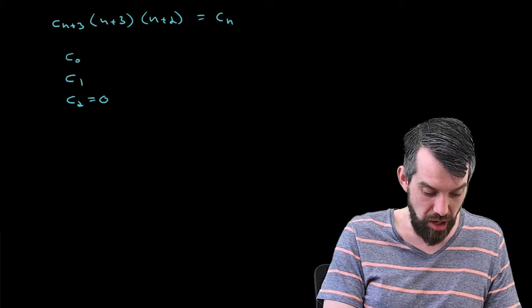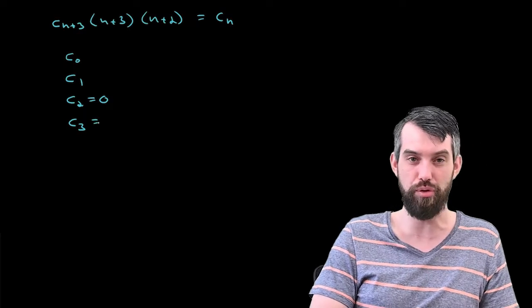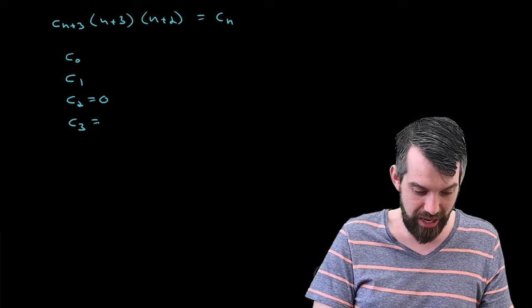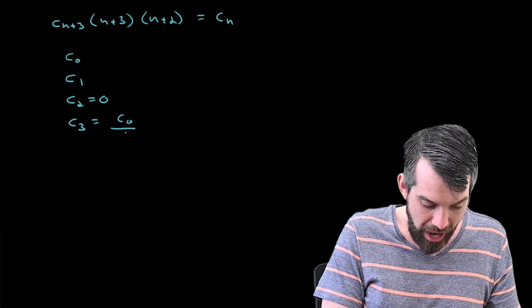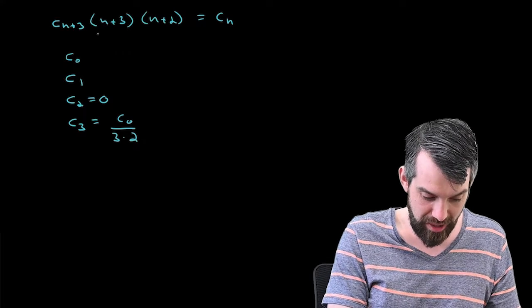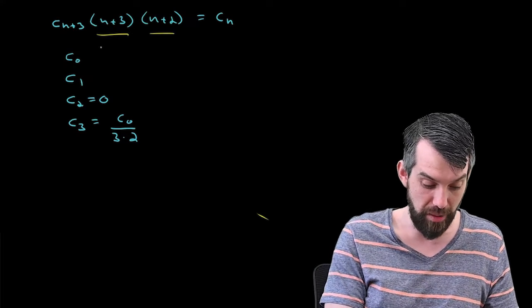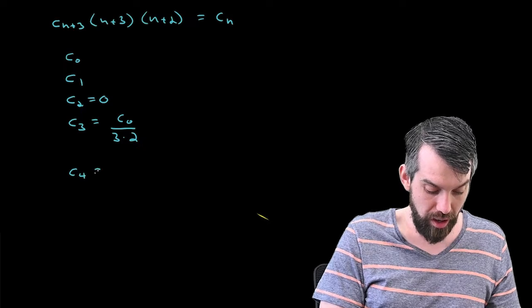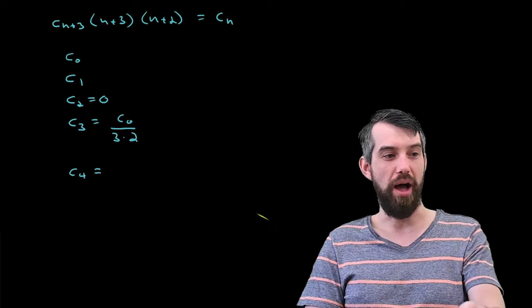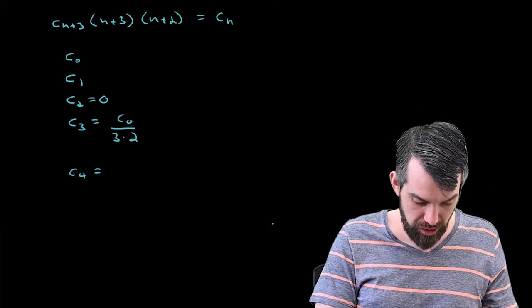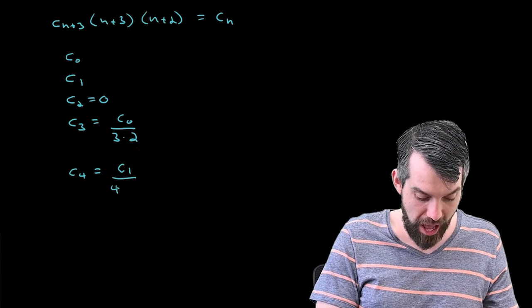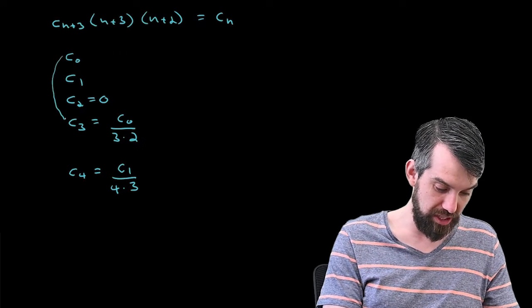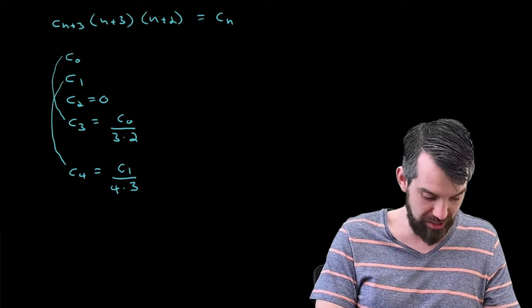And so that immediately tells us that the c_2 has to be equal to 0. So we can pull out that first term, and now we get to ignore it. So then what I'm going to look at is the coefficient of x to the n plus 1 over there and the coefficient of x to the n plus 1 over there. Those two things are the same, and thus we get the recurrence relation that c_n plus 3 times n plus 3 times n plus 2 is just equal to c_n. So let me give myself some space and pull that up to the top because this is the recurrence relation that we want to study.